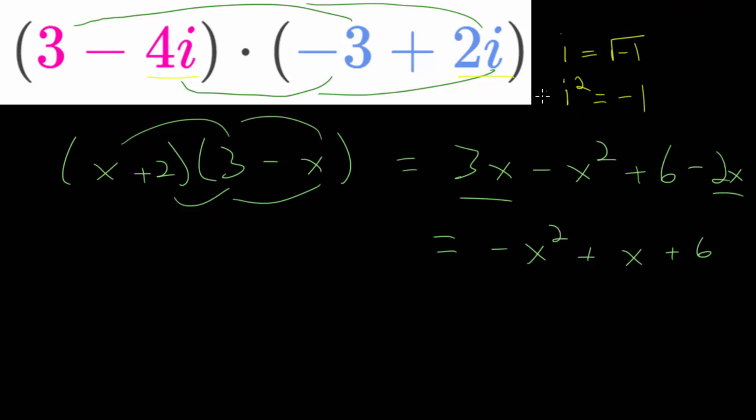So i squared is negative 1, and we'll need to use this information when multiplying these out. So let's start by just rewriting both of these. We have 3 minus 4i multiplied by minus 3 plus 2i, and we will use distribution. Multiply the 3 into both of these terms and multiply the minus 4i into both of these terms.